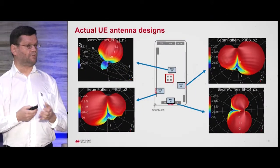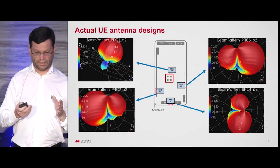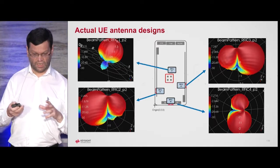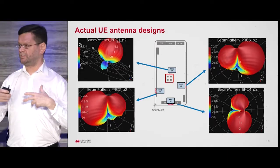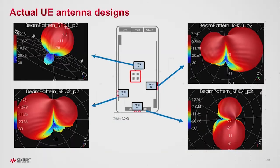This is an example of real UE designs modeled in system view. We can see how antennas in different positions on the mobile actually look different. This is the pattern that has to be used to filter the incoming signal after it's been filtered by the base station and the channel model.